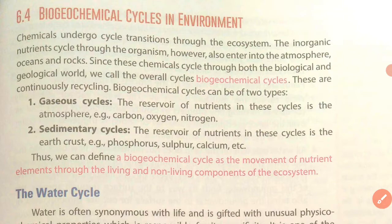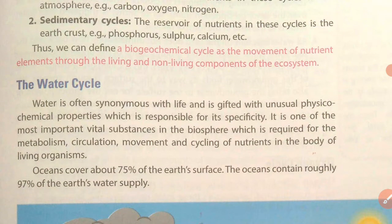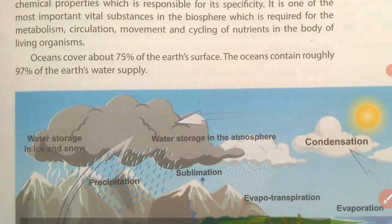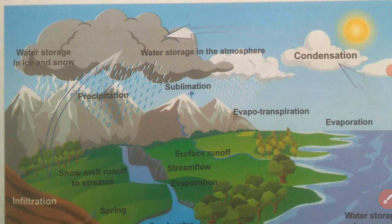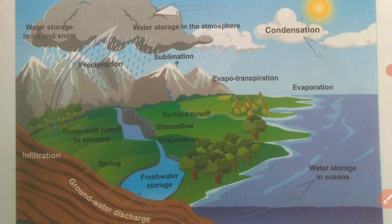Now we will talk about the water cycle — how water gets transferred from non-living to living beings and then back from living to non-living beings. The water cycle is also called the hydrological cycle, and its circulation is very important because water is the basic need of life and without water life cannot exist. This is a diagram of the water cycle, which shows how water moves through the system.